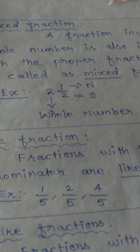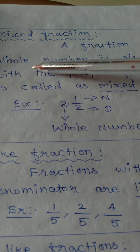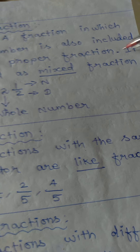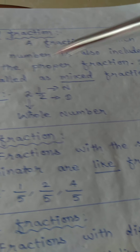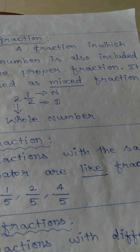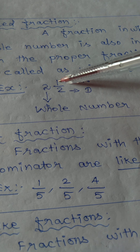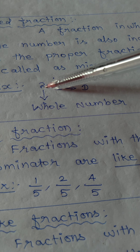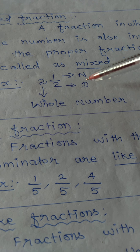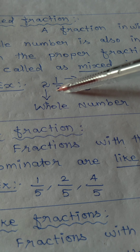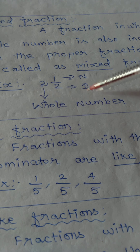Next is the mixed fraction. A mixed fraction is a fraction in which a whole number is also included with a proper fraction. For example, 2 and 1 by 2 — where 2 is the whole number, 1 is the numerator, and 2 is the denominator. This is a mixed fraction.